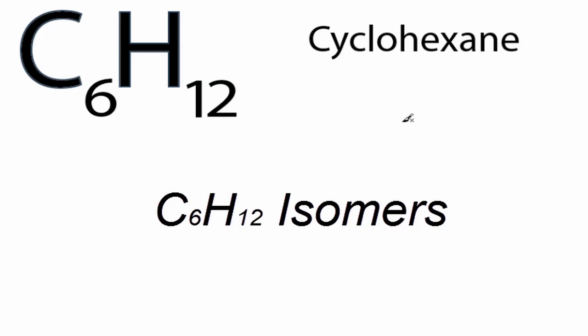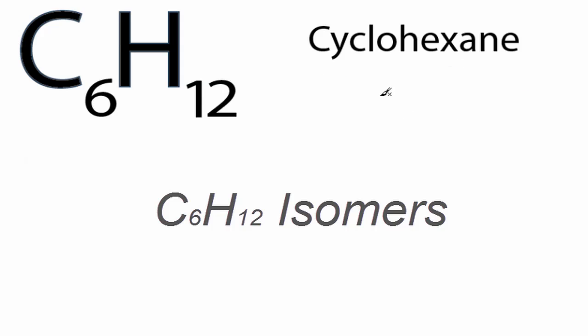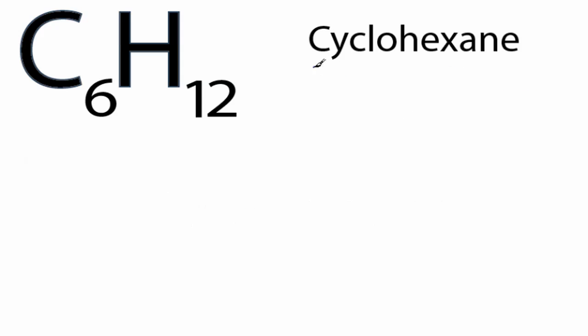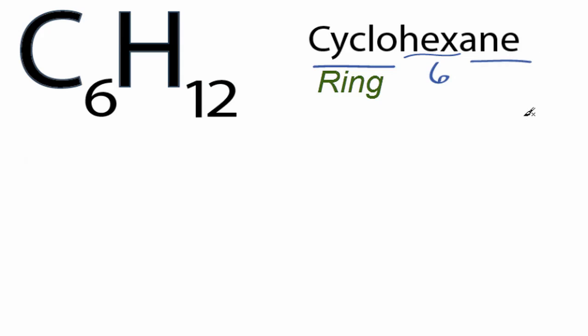We're going to look at cyclohexane. "Cyclo" means we're going to have a ring. "Hex" means six — we have six carbons. And "ane" means it's going to be an alkane, which means we'll have only single bonds.